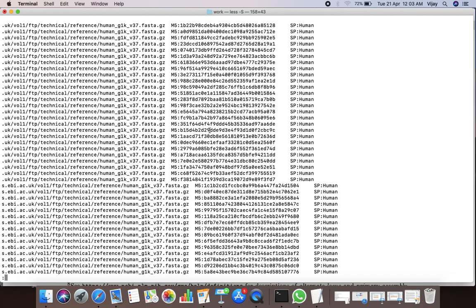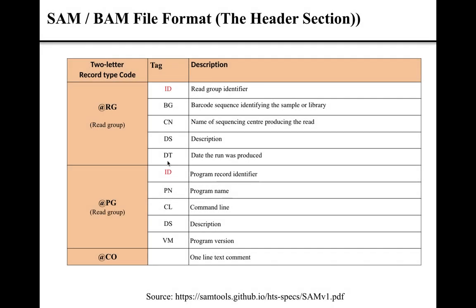The third type of line in the header section of the SAM file format is the line starting with @RG. The line starting with @RG describes information about the grouping of the reads. The ID tag of the RG line is mandatory, and the value of the ID tag represents the read group identifier.